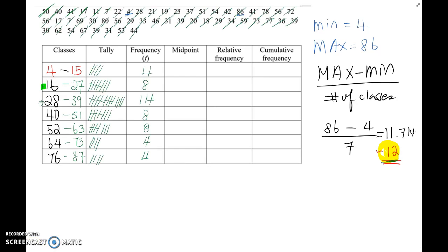If you finish this table until frequency column, then you will get first class 4 data, second class 8, third class 14, fourth class 8, fifth class 8, sixth class 4, and seventh class 4 data belonged.